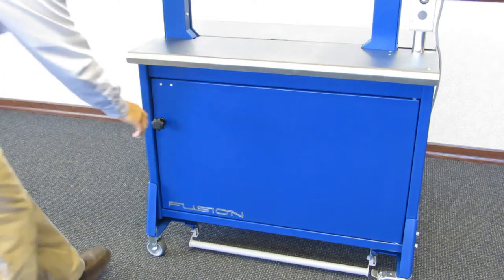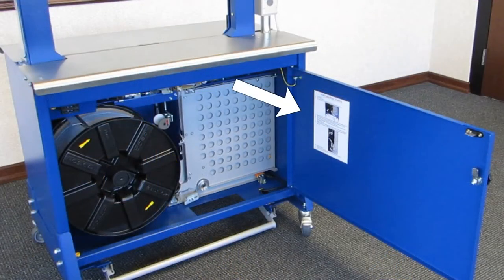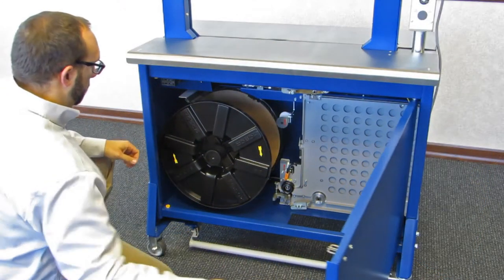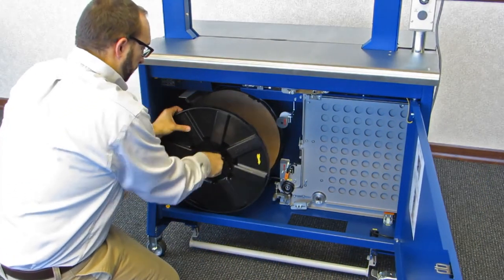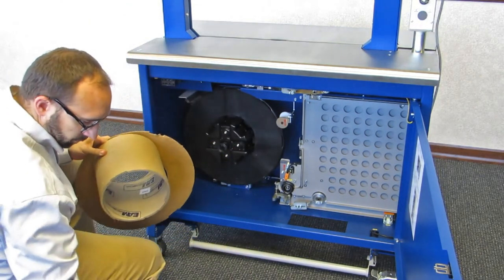To thread the strap, begin by opening the front door of the machine. Please note there is a threading instruction label located on the inside of the door panel if needed. Turn the dispenser knob counterclockwise and remove the outer spool cover. Remove and discard all cardboard items remaining from the empty spool.